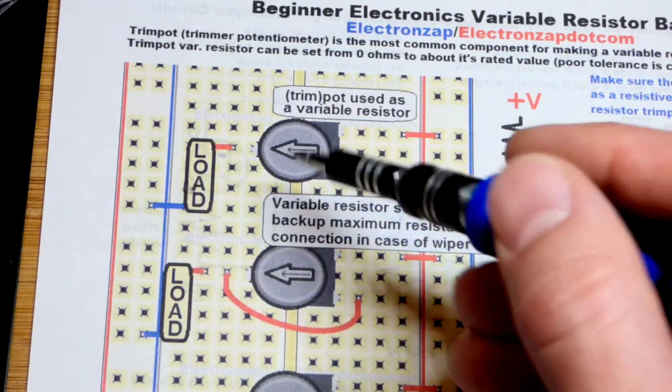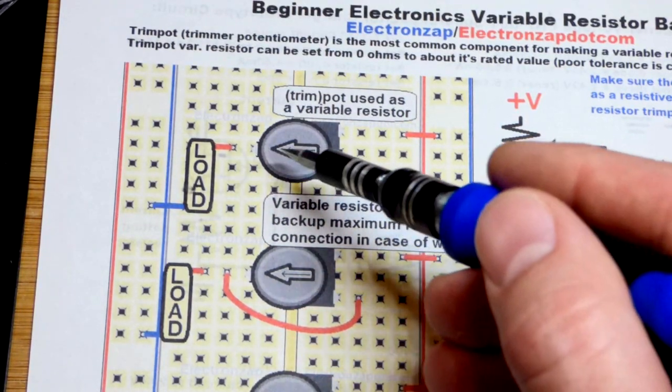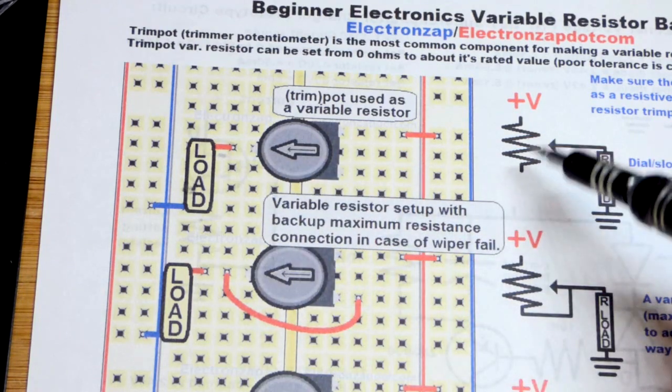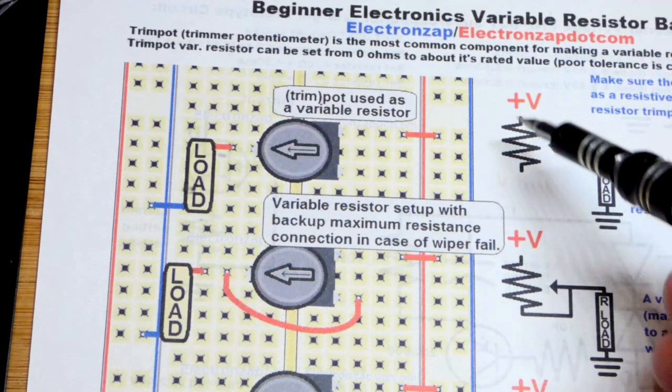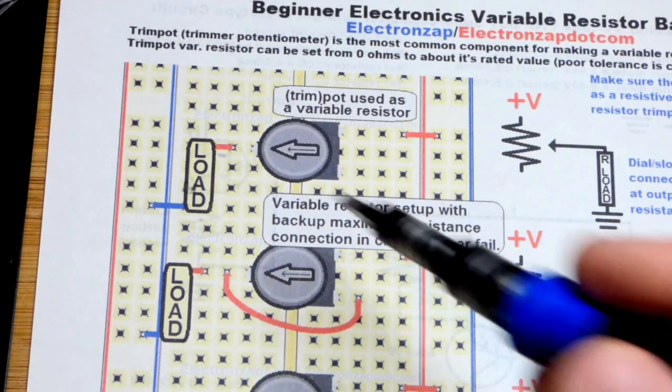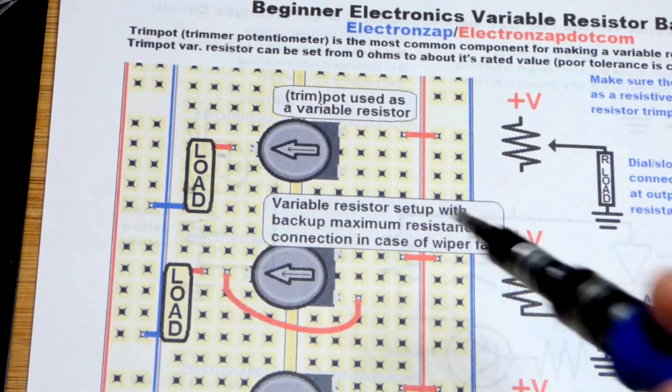The load will see the direct power supply. You'd still want a current limiting resistor but you could turn the dial all the way here and you'd have the full resistance, or halfway you'd have half the resistance. The farther you are from the supply voltage, the more resistance you'll have in between based on its rated value.